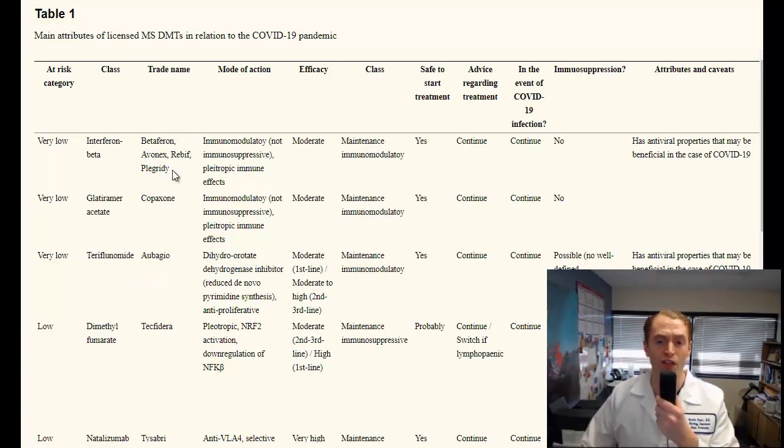Interferons, beta-interferons, are proteins that are naturally secreted by the liver in response to viral infections. They work by diverting the immune system to more of a T helper cell type 2 phenotype. So they don't really weaken the immune system. They just modulate it. They mentioned that these drugs have some antiviral properties and speculate they could even be beneficial in COVID-19. I don't think there's any specific evidence about that, but they're likely safe to take and to continue. And that is, in fact, what they recommend.